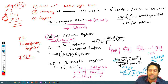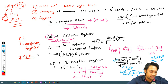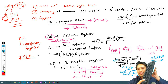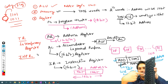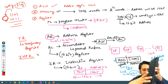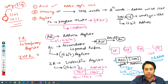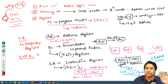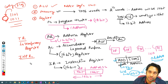Next we have INPR — the input register. Whatever input a user enters from the keyboard is given to the CPU, and that input is stored in the input register.